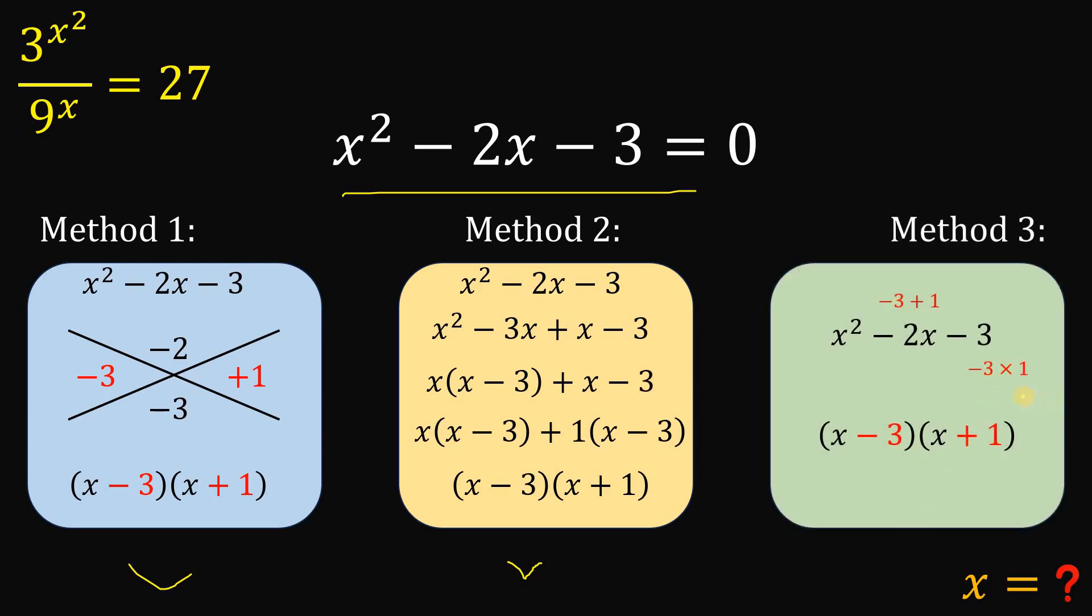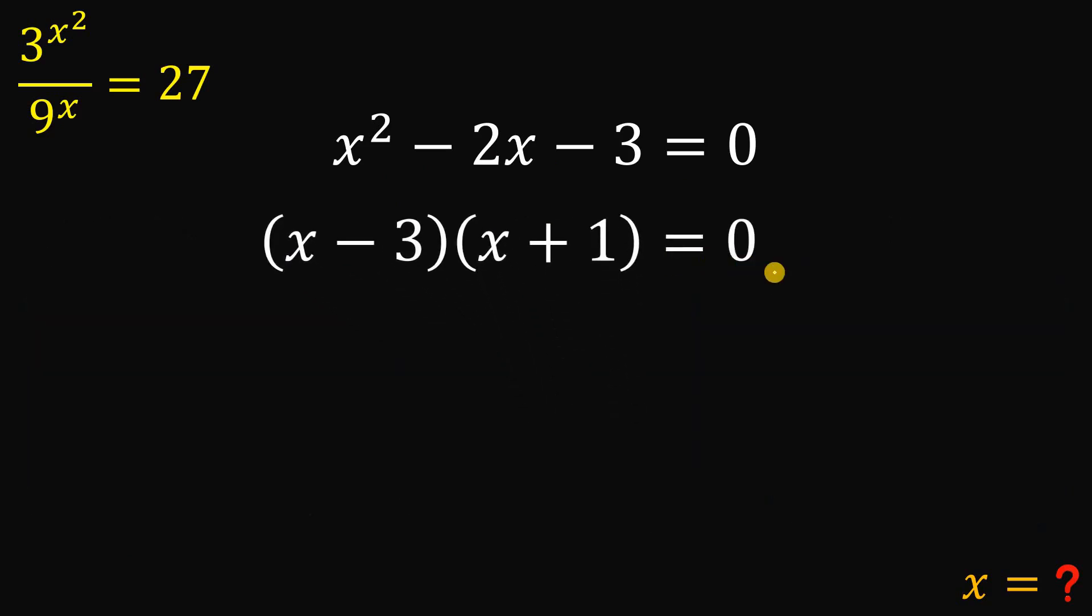So, what you're going to do is to think of two numbers that when you multiply, you get the constant term, which is negative 3. So, from here, we have negative 3 times 1. And when you add these two numbers, you get the coefficient of the middle term, which is negative 3 plus 1. You have negative 2. And once you have those two numbers, then you already factored the quadratic equation or quadratic expression. So, you have your x minus 3 multiplied by x plus 1. So, technically speaking, the factored form of x squared minus 2x minus 3 equals 0 is x minus 3 multiplied by x plus 1 equals 0.